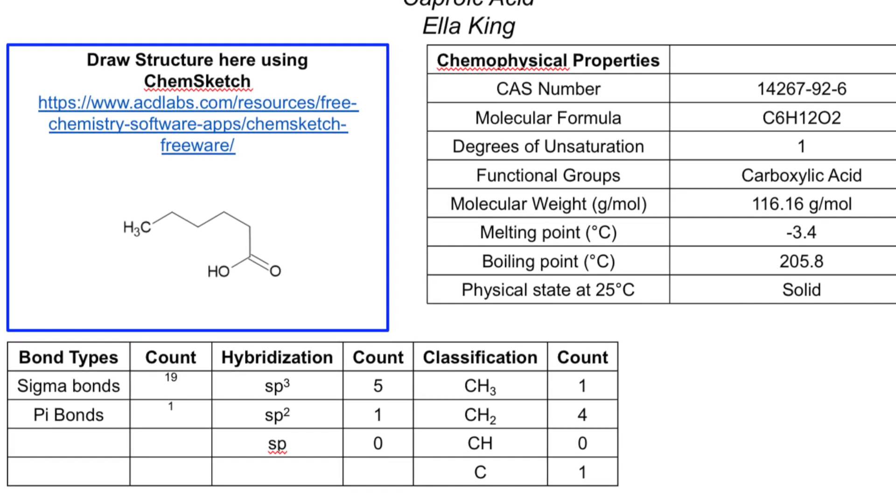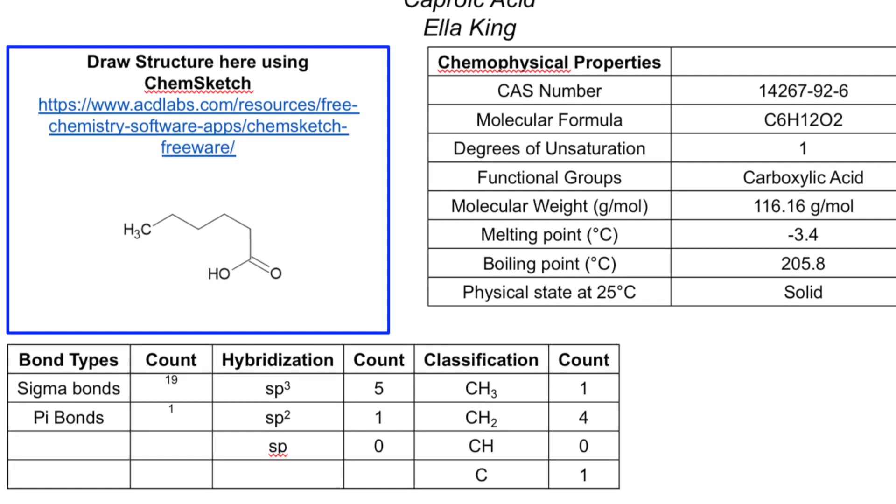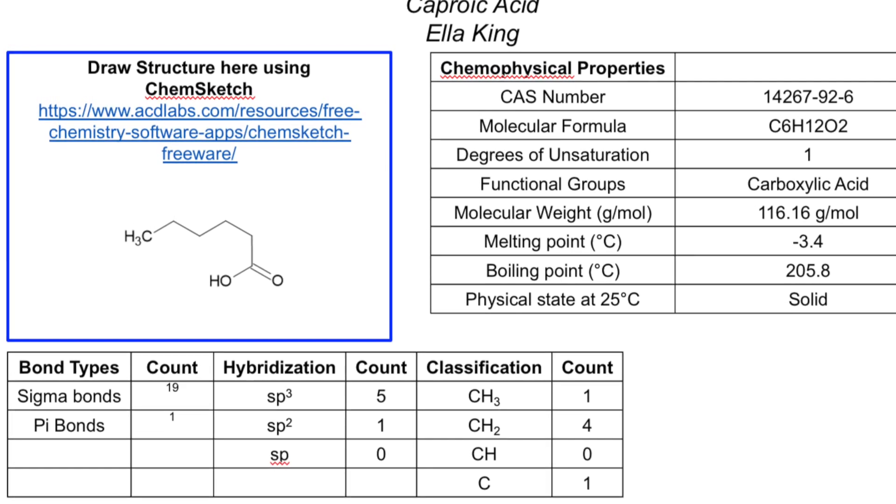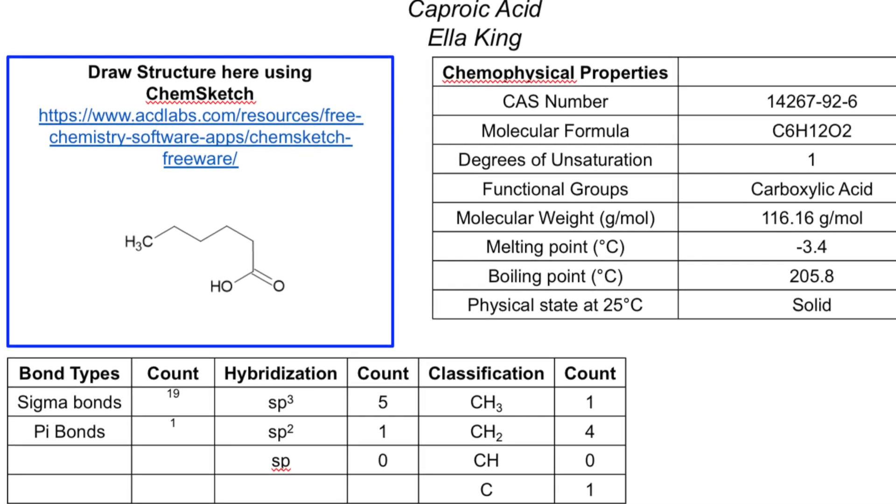In this video, I will be showing you all how to build the molecular structure of caproic acid, as seen above with its chemophysical properties, that has a molecular formula of C6H12O2.